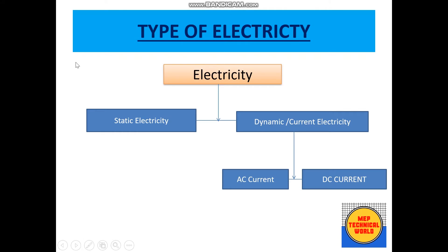Now, coming to types of electricity — there are two types: one is static electricity, and the other is dynamic or current electricity. Current electricity is further divided into two parts: AC current and DC current, that is, alternating current and direct current.